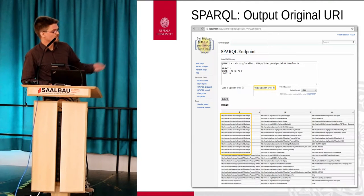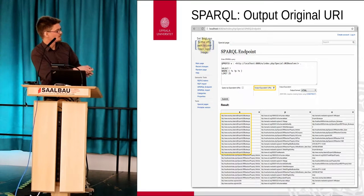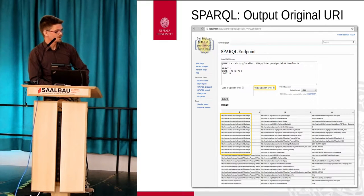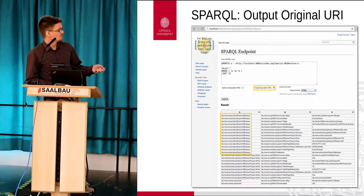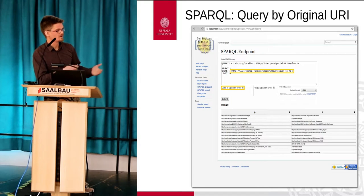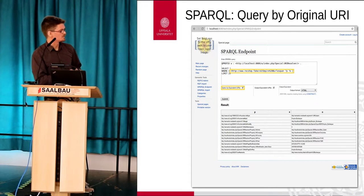One of the features of RDFIO, and why we hook into the SPARQL Exchange feature, is that you can click to output the original URIs. If you look carefully you might see that those URIs change - now we have something from the original schema instead. So we get the URIs that were used when we imported originally, and we can even query by original URIs. This is really the core idea of RDFIO: to be able to work in the original schema, even though the data is imported into Semantic MediaWiki.